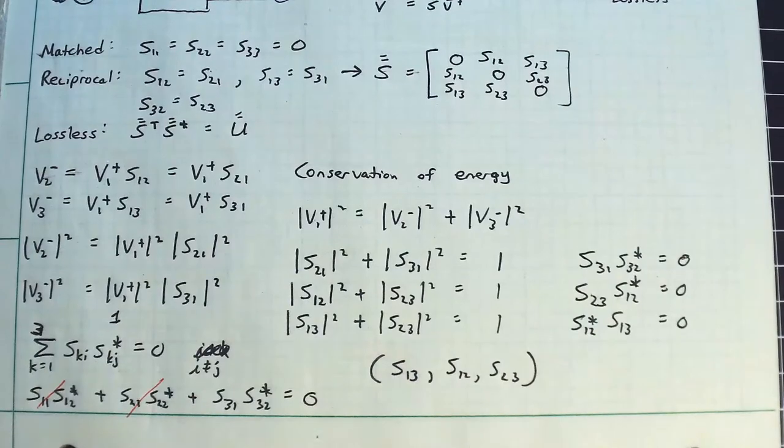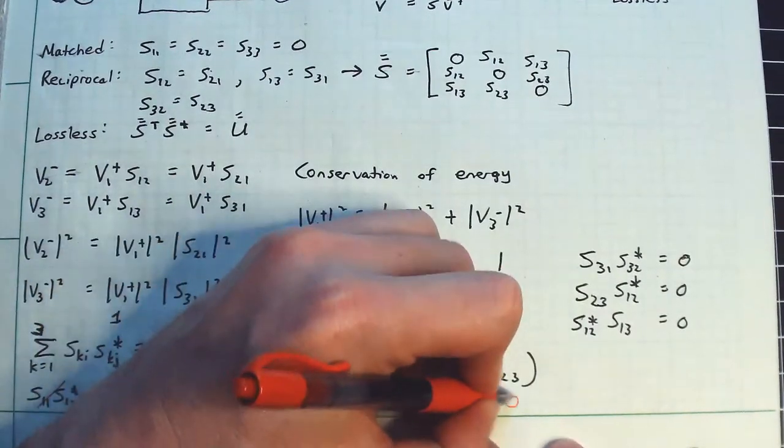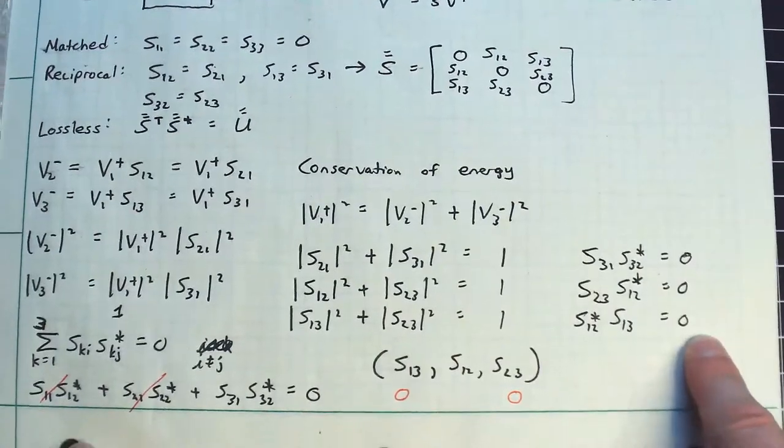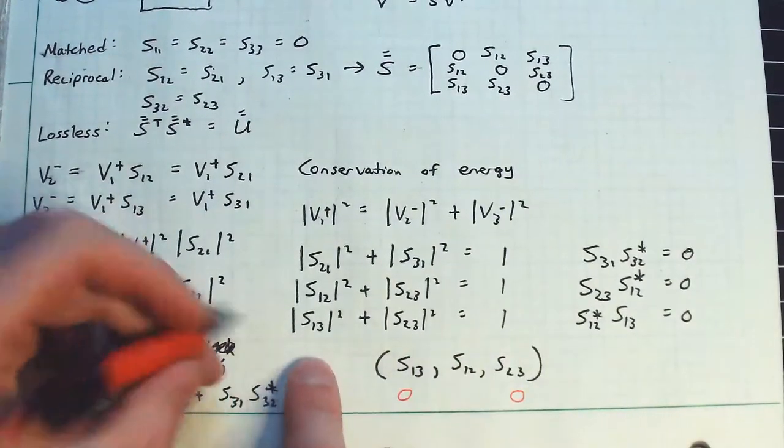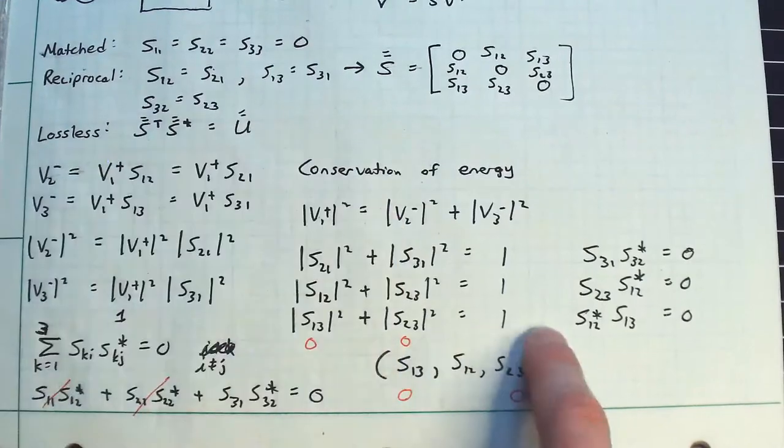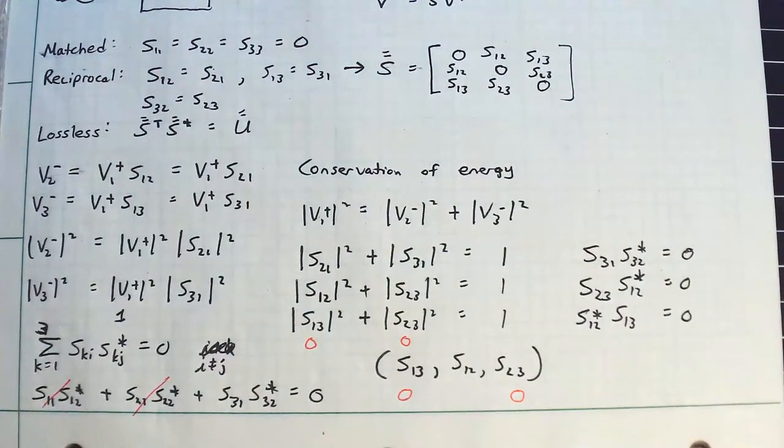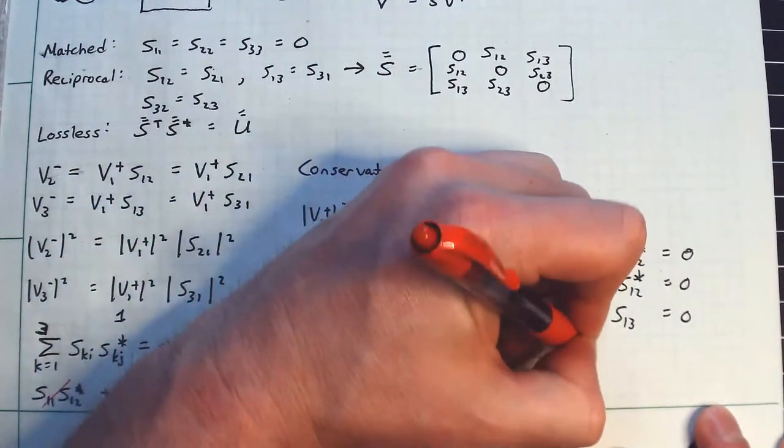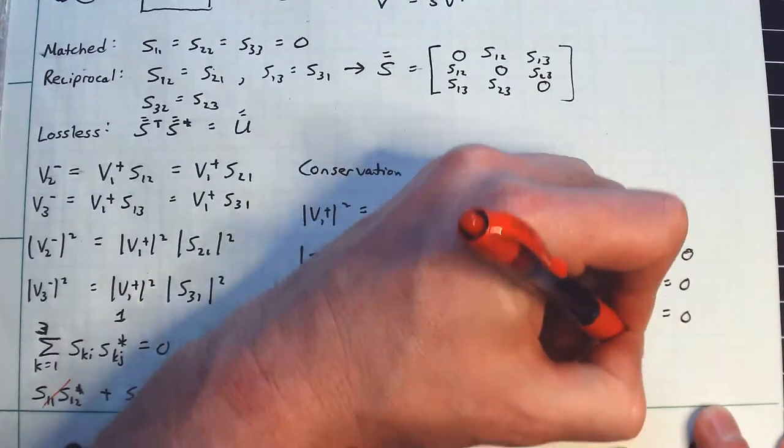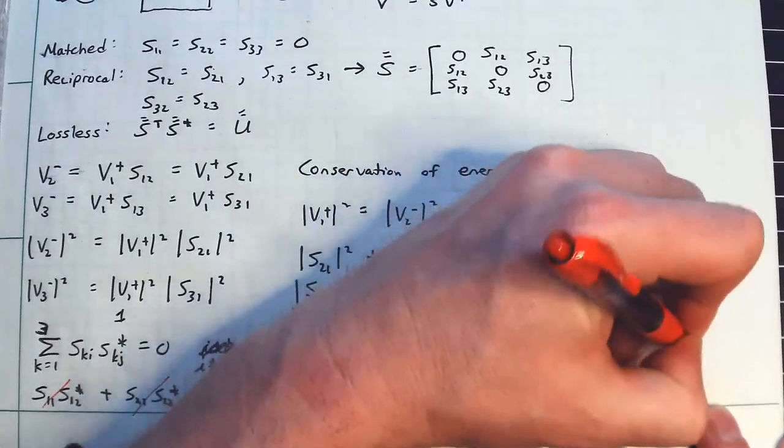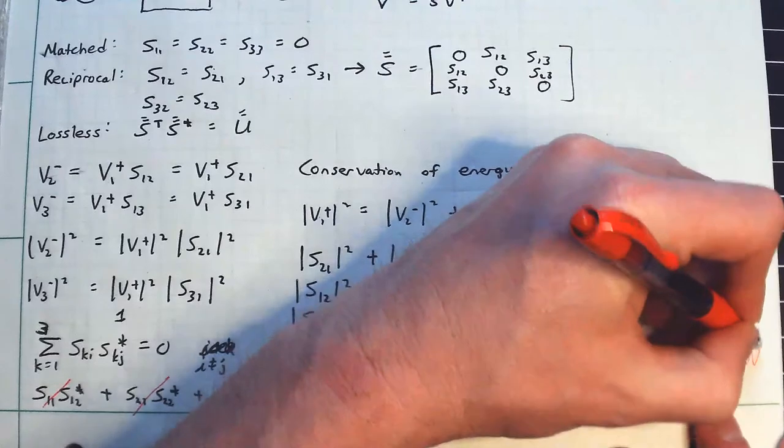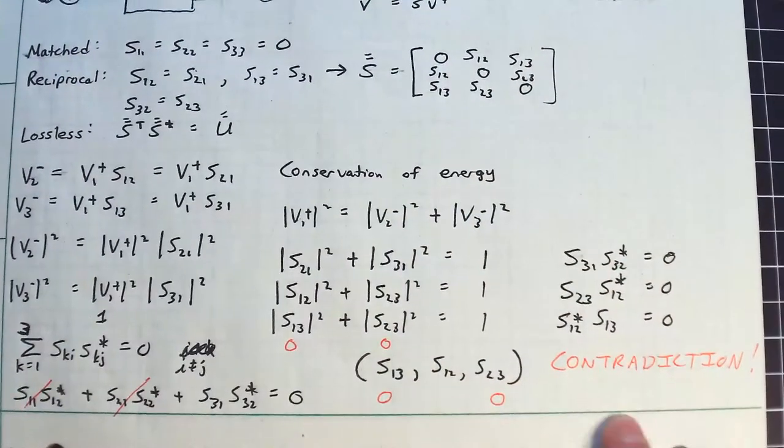So let's just suppose hypothetically, I'm going to set these to be zero and these to be zero. That will satisfy these conditions. But if S13 and S23 are zero, that means zero plus zero equals one. So that is bad. That is a contradiction.